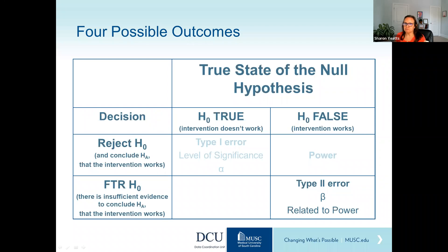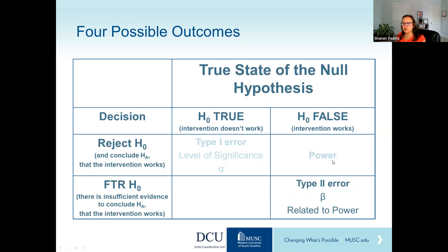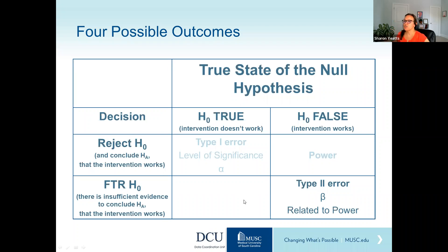Of the four possible outcomes, two are correct decisions and two are mistakes we'd like to avoid. A correct decision: we reject the null hypothesis when in fact it's false. The data support the alternative beyond a reasonable doubt — you write it up, present at a conference, it's the basis for the rest of your research career. There's another correct decision, slightly less exciting, which is failing to reject a true null hypothesis. The null hypothesis is true, the intervention doesn't do anything, and we conclude there's not enough evidence to reject the null. We all know there's a publication bias in the literature — negative trials sometimes have a harder time getting published — but it's still a correct decision.